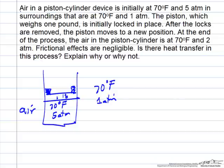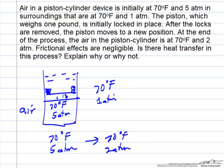When the locks are removed, it moves to a new position, and we're only at 2 atm, so the gas expands. It goes from 70 degrees and 5 atm to 70 degrees and 2 atm, somewhere up here.